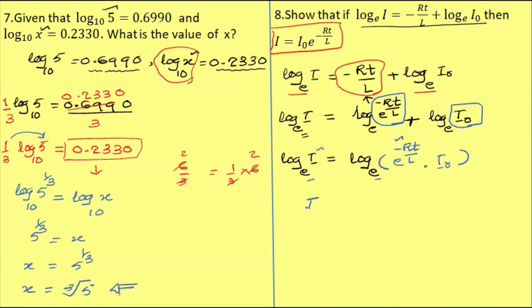So i equals e power minus Rt by L into i₀.